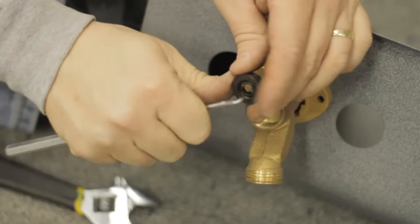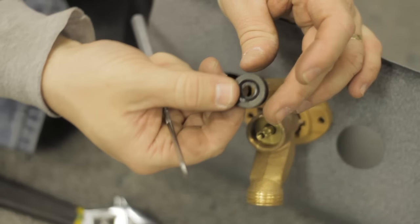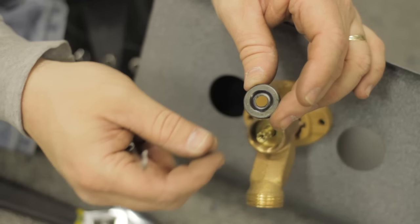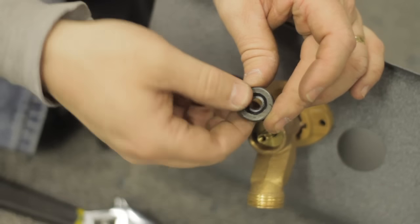You can use a small screwdriver, a pick, maybe even a small knife to remove this. Now this one's rubber. Like I say, some of them will be made of a packing material, string material.